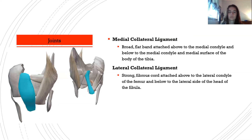The medial collateral ligament is a broad flat band attached above to the medial condyle of the femur and below to the medial condyle and medial surface of the tibia. The lateral collateral ligament is a strong fibrous cord attached above to the lateral condyle of the femur and below to the lateral side of the head of the fibula.